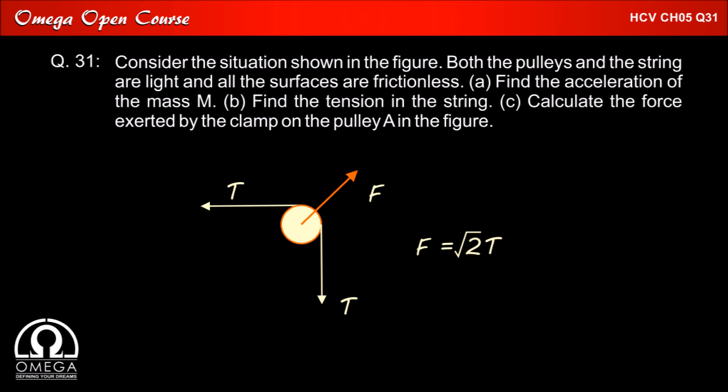Since both the tensions are of equal magnitude and at 90 degrees to each other, their resultant is root 2T at an angle 45 degrees with horizontal. Thus, f is equal to root 2T.